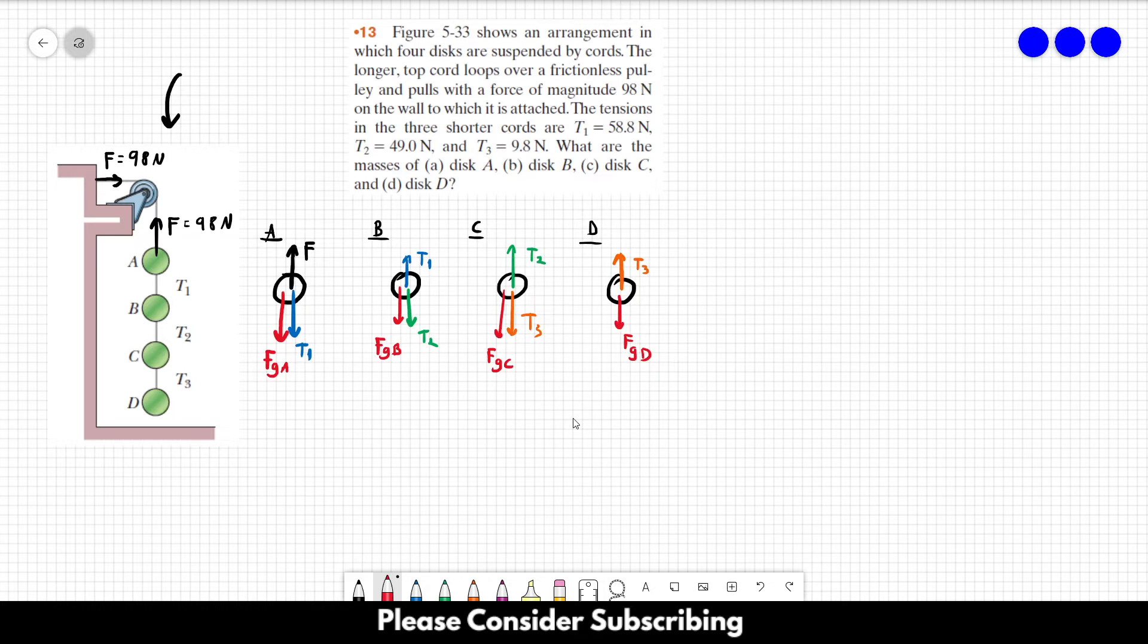And we have gravity pointing downwards FGD. So now what we have to do is write Newton's second law for the four discs. So for the first disc, we have F minus T1 minus FGA equals mass times the acceleration of disc A. However, they don't have any acceleration. Their velocity is zero and will keep being zero, so the acceleration is zero. The same is true for disc B, disc C, and disc D.